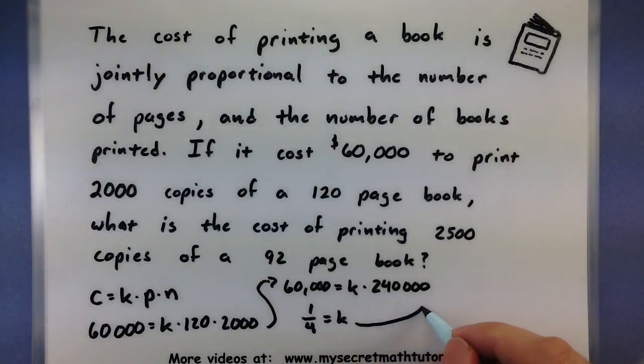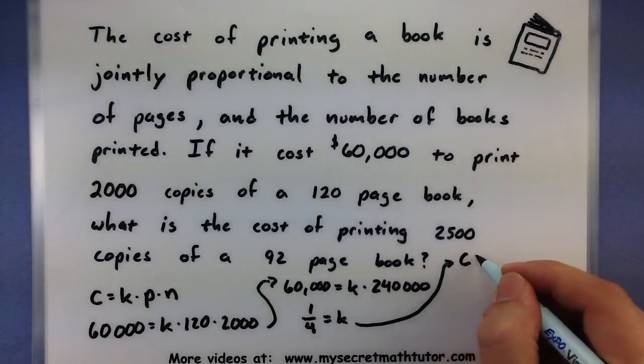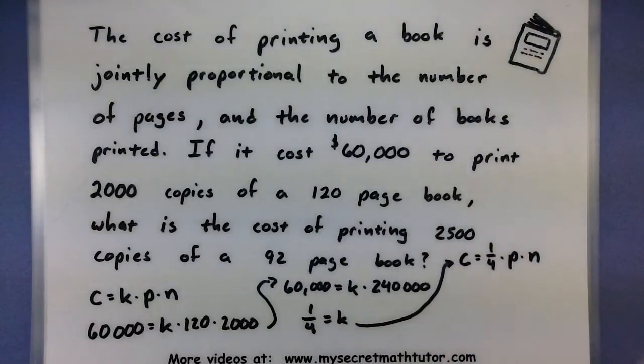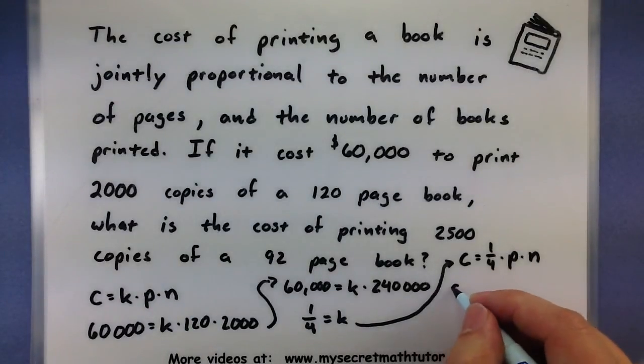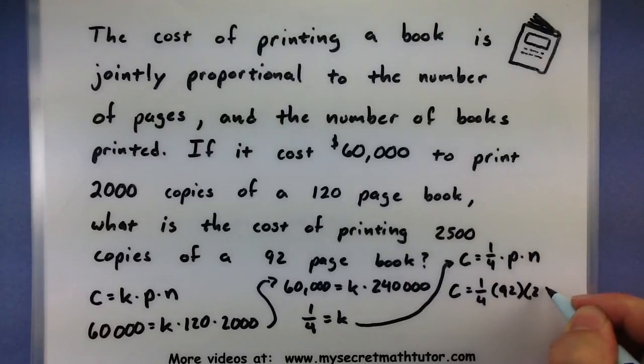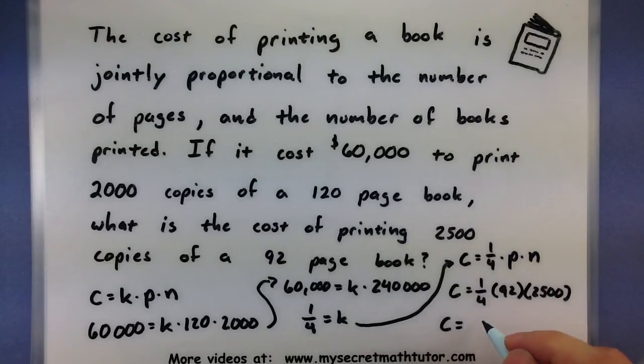So now we need to put our value of k into our formula. C equals one fourth times the number of pages times the number of books. For the last bit, what is the cost of printing 2,500 copies of a 92 page book? Let's find out. We'll take one fourth, we have a 92 page book, and 2,500 copies. Multiplying everything out here would give us 57,500 bucks.